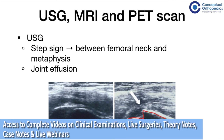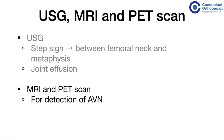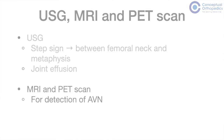Ultrasound can also detect hip joint effusion. MRI and PET scans can also be done to detect the presence of AVN, however they are not routinely performed in regular cases.